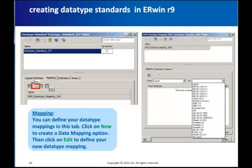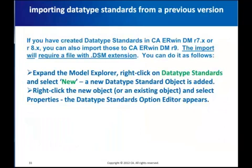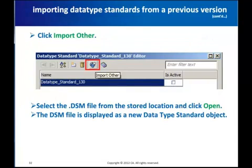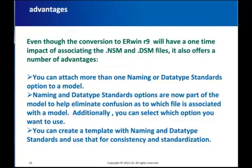Once again, the functionality is the same as in earlier versions. You can also import DSM files from previous versions by clicking the Import option in the data type standards editor. Create a new data type standards object and from its properties click Import. You need a DSM file to import from. Click the import icon, which will prompt you for the location of the DSM file, which can then be imported. Even though this change does require a one-time conversion effort, it comes with a few advantages.